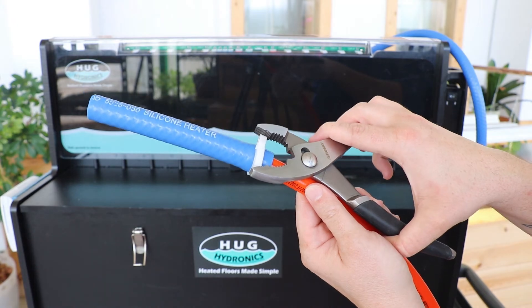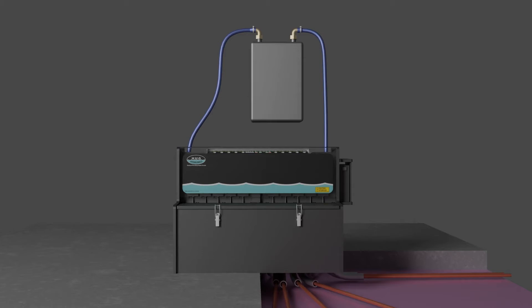Then, tighten with a pair of pliers. Now, we're going to connect the long blue hoses on each end of the tank to your water heater.